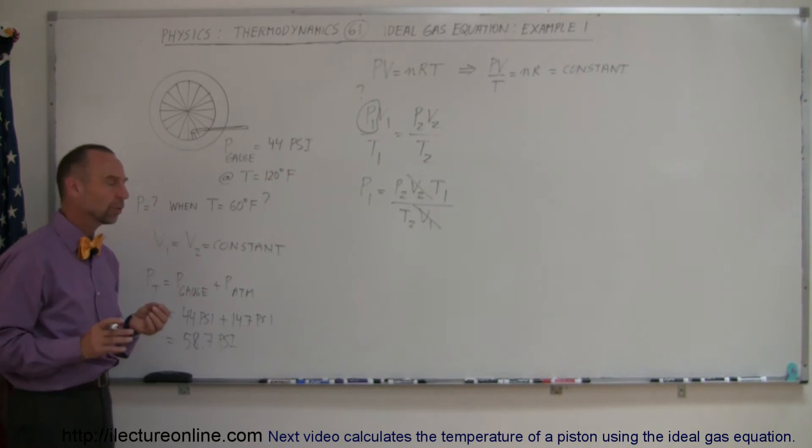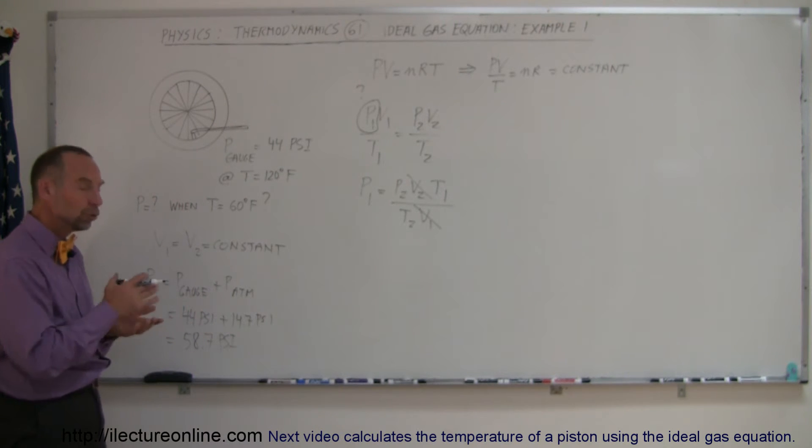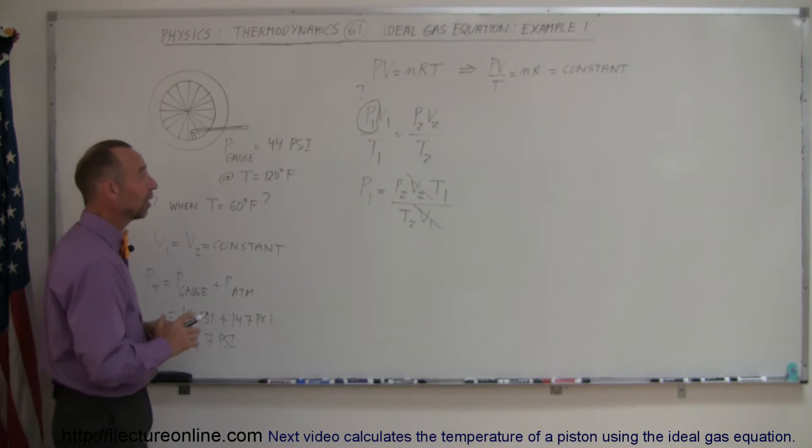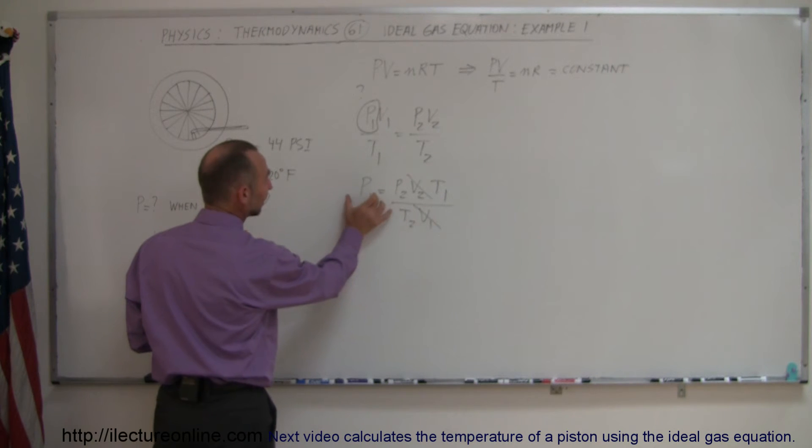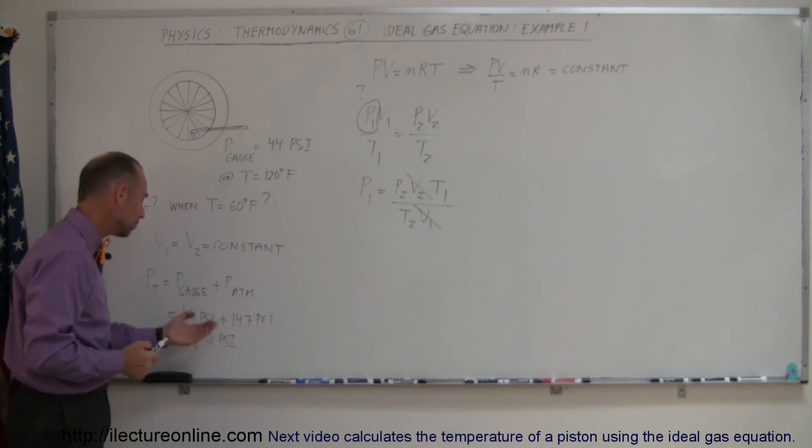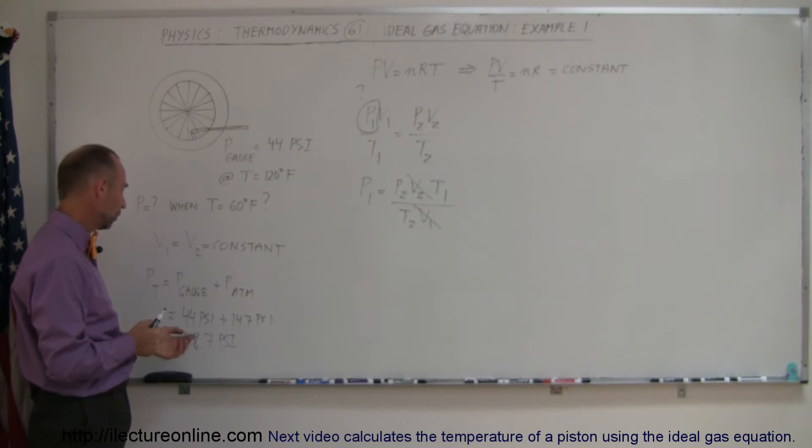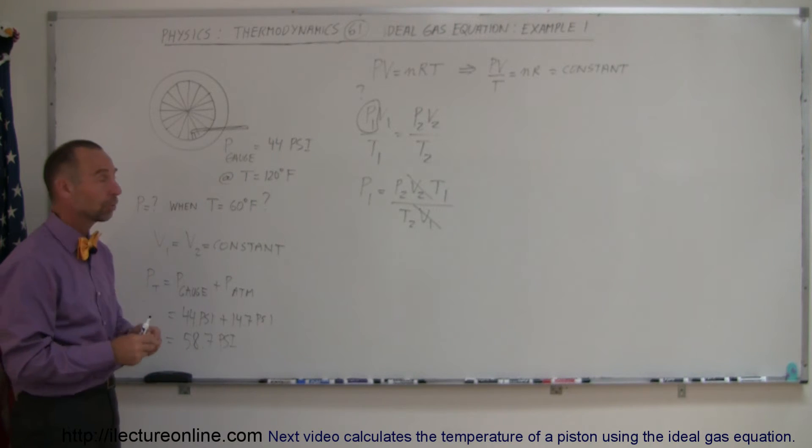Typically we want to have the pressure in terms of newtons per square meter or pascals, but since we're calculating pressure and we have pressure on the right side here, we're just going to get the answer in the same units that we are using right here. So 58.7 is the total pressure in the tire when it's 120 degrees Fahrenheit.